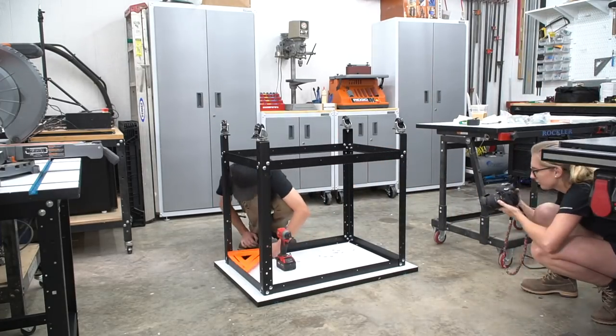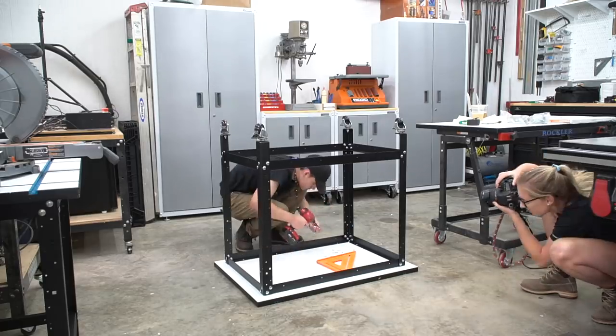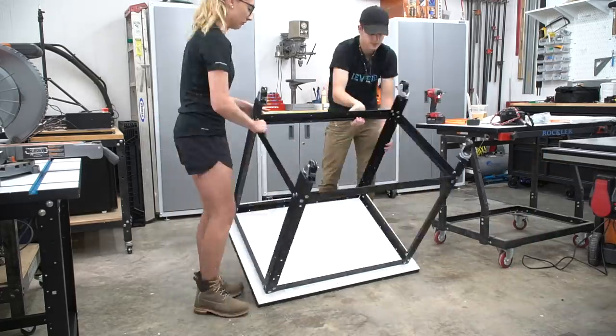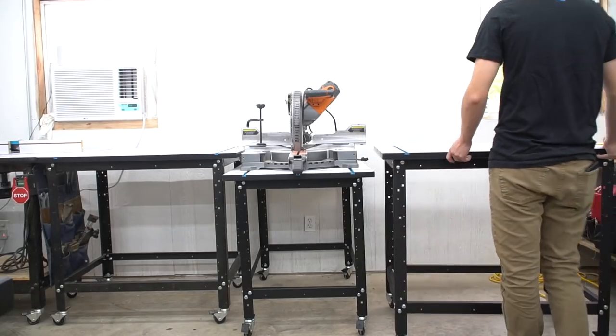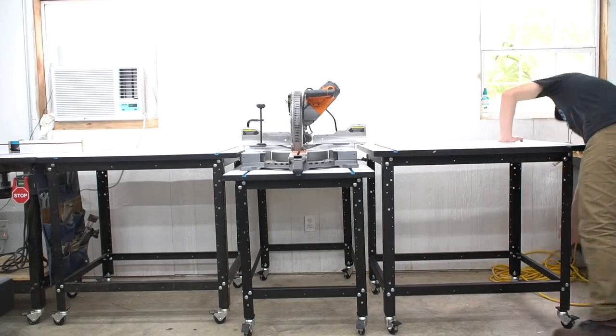These stands come with leveling feet, but we opted to add casters to keep everything in the shop mobile. The last step of assembly is we added a t-track table to the top which will be very useful later.